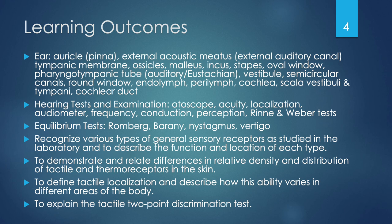We'll also be looking at hearing tests and examinations, largely in the lab: the otoscope, acuity, localization, using an audiometer, also looking at frequency, conduction, perception, and the Rinne and Weber tests. You'll also be doing equilibrium tests in the lab, including the Romberg and Barany tests, and look at nystagmus and vertigo. Also, you'll be able to recognize various types of sensory receptors as studied in the lab and describe the function and location of each type, to demonstrate differences in relative density and distribution of tactile and thermoreceptors in the skin, to define tactile localization, and to explain the tactile two-point discrimination test.